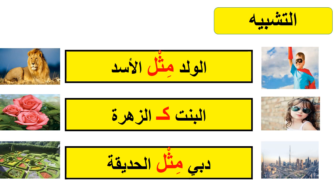Finally, you can say دبي مثل الحديقة — 'Dubai is like the garden.' This is the simile: when you make someone or something like something else.